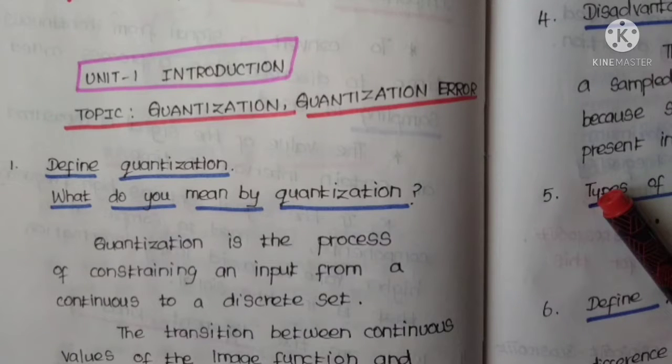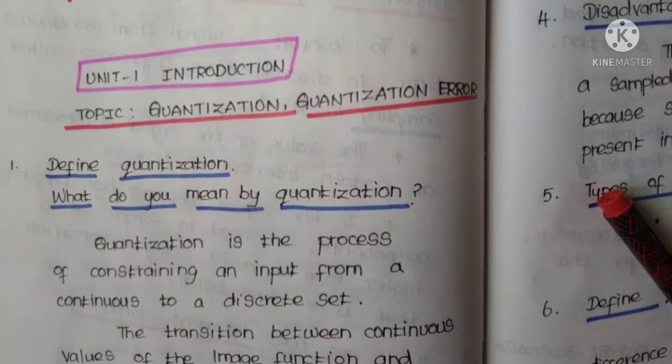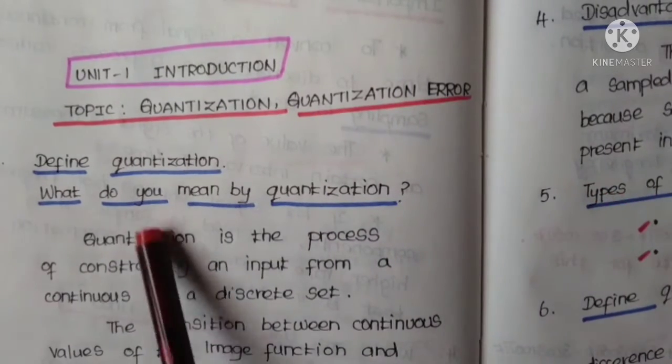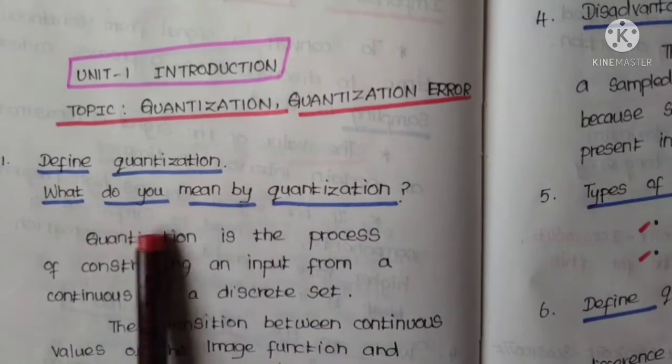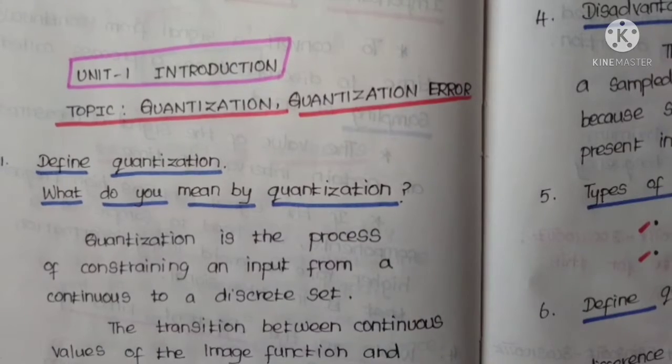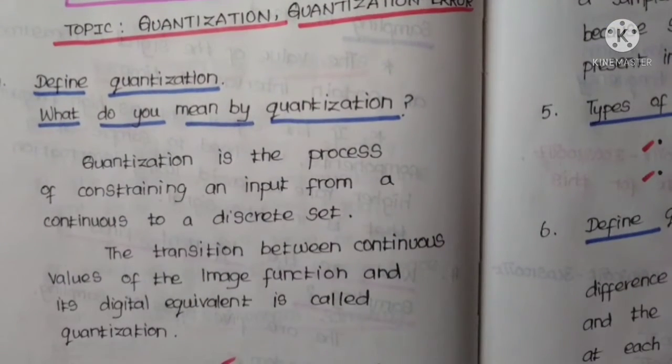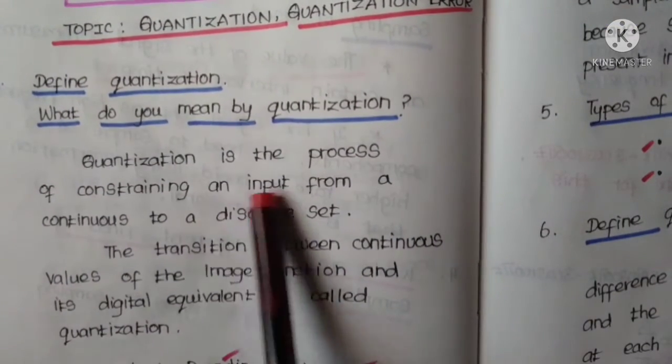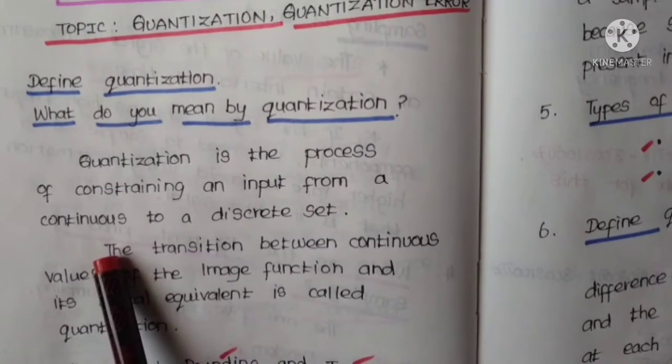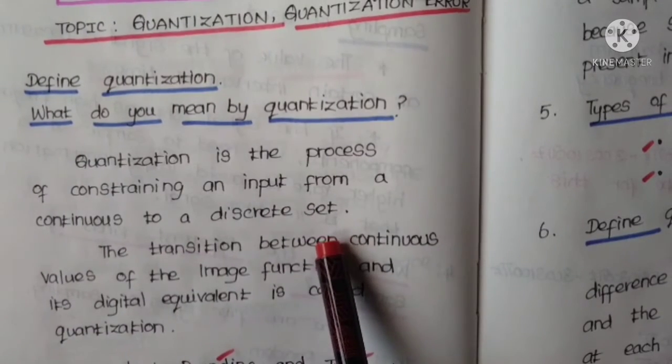Today we will see digital signal processing unit 1 introduction. The topic is quantization and quantization error. So define quantization or what do you mean by quantization? Quantization is the process of constraining an input from a continuous to a discrete set of values.